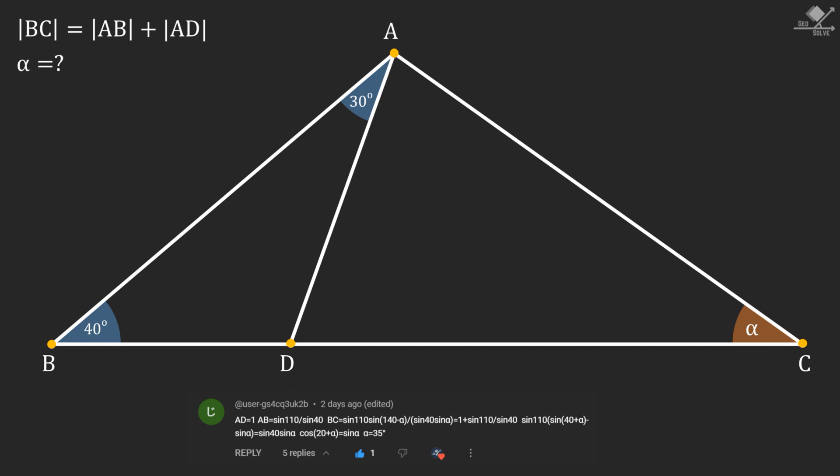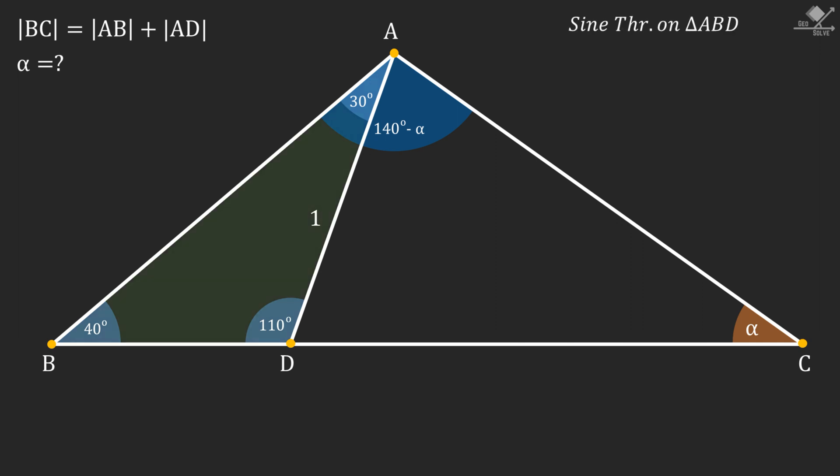First of all, we can find angle BDA as 110 degrees easily. Next, we can also express angle BAC as 140 minus alpha degrees. Now, let's assume the length of the line segment AD as one unit for simplicity and use sine theorem on triangle ABD.